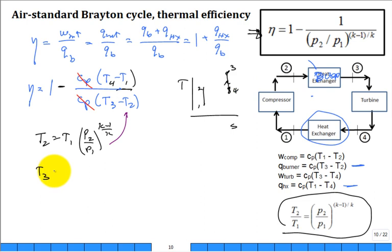And so T3 is equal to T4 times the same pressure ratio P2 over P1 to the K minus 1 over K. And then substitute that one right in there.